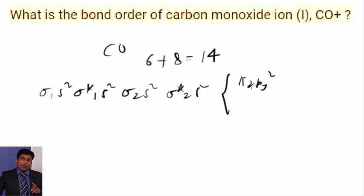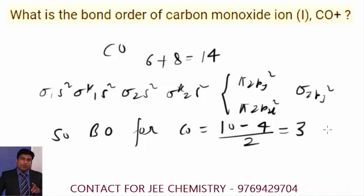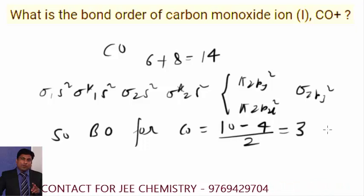pi 2py2, pi 2px2, sigma 2pz2. So the bond order for CO comes as total number of bonding electrons here is 10 and total number of anti-bonding electrons is 4, 10 minus 4 by 2 and that comes 3. This is the bond order for CO.